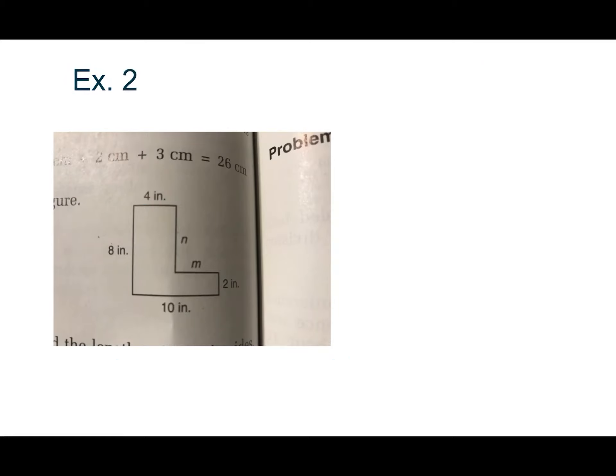All right, here's our next example. Again, you're going to have to figure out the different sides. So N and M are unknowns. And again, we can use logic here.